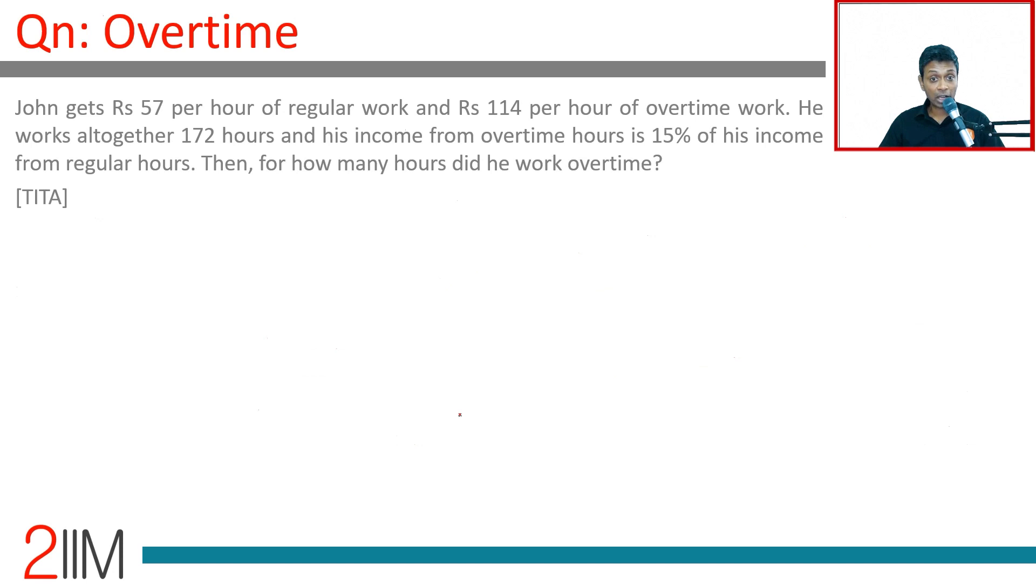John gets rupees 57 per hour of regular work and rupees 114 per hour of overtime work. He works altogether 172 hours and his income from overtime hours is 15 percent of his income from regular hours.